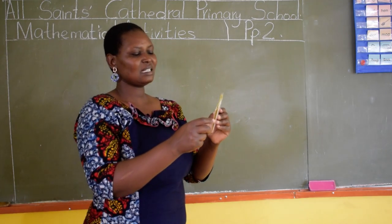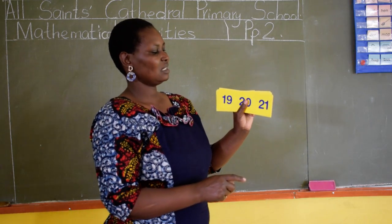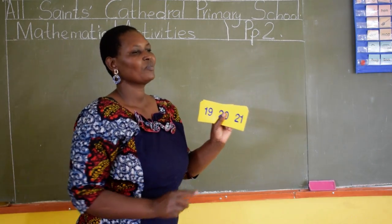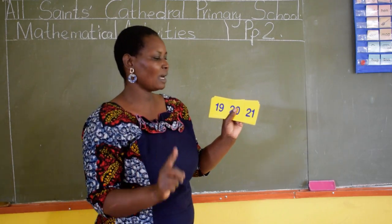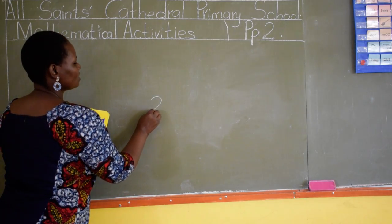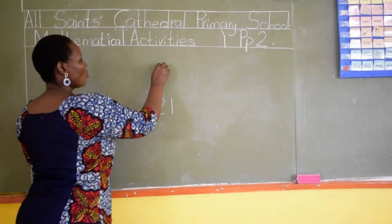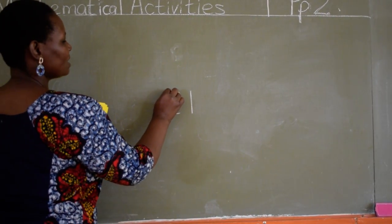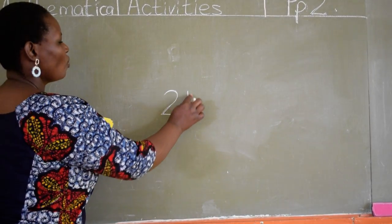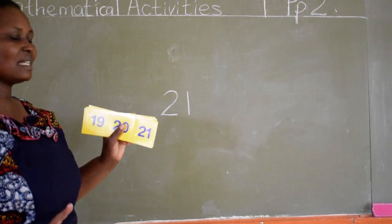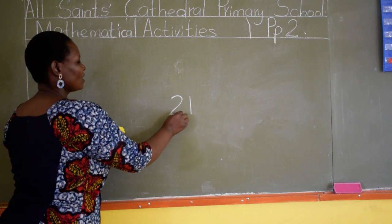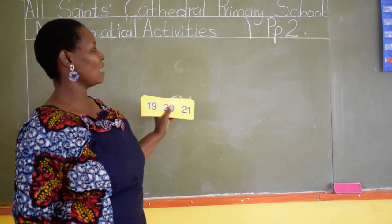Daniel, can you tell us the number that is after number 20? Which number is this, Daniel? Very good. This is number 21. Can you say 21? I have learned that most of you confuse number 21 and number 12. When you are writing 21, you start with 2. You don't start with 1, you start with 2. Say 21. Can you write number 21 on your desk? Let us write it together. 21. So do not confuse number 21 and number 12.